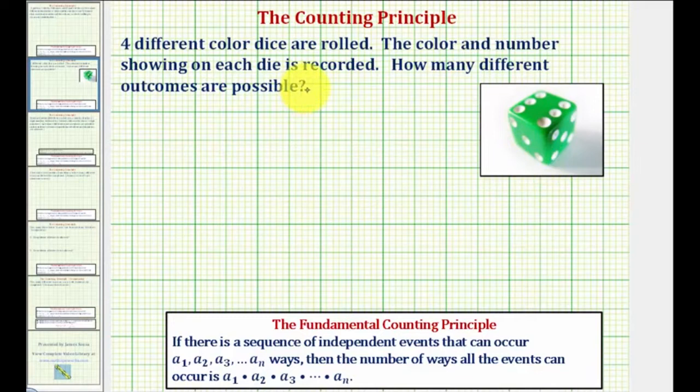We can determine the total number of possible outcomes to the situation by using the counting principle, where if there is a sequence of independent events that can occur a₁, a₂, a₃ and so on ways, then the number of ways all the events can occur is equal to the product of the number of ways of each independent event.